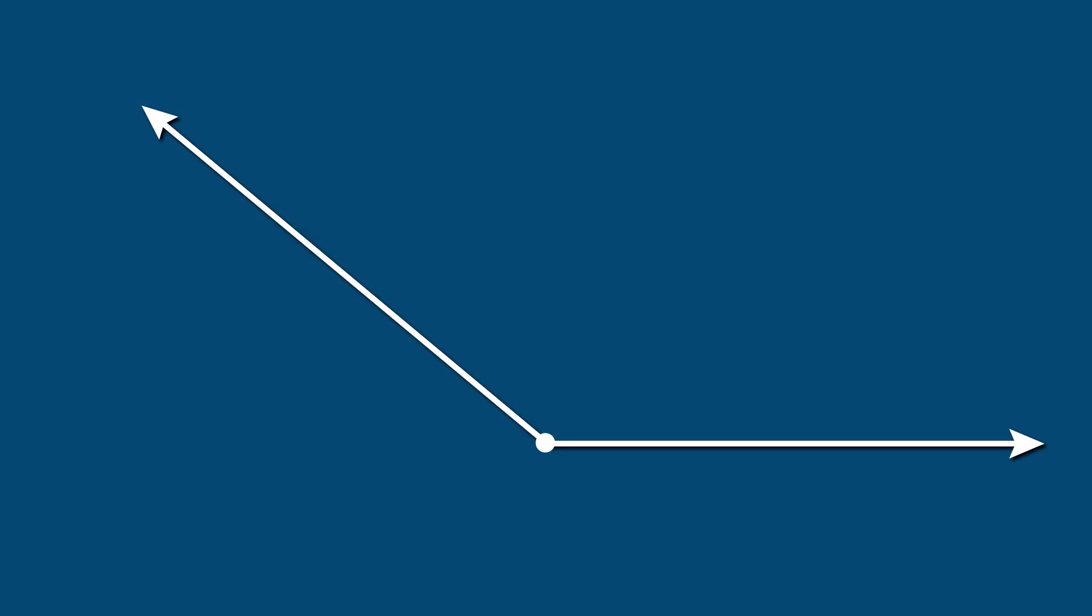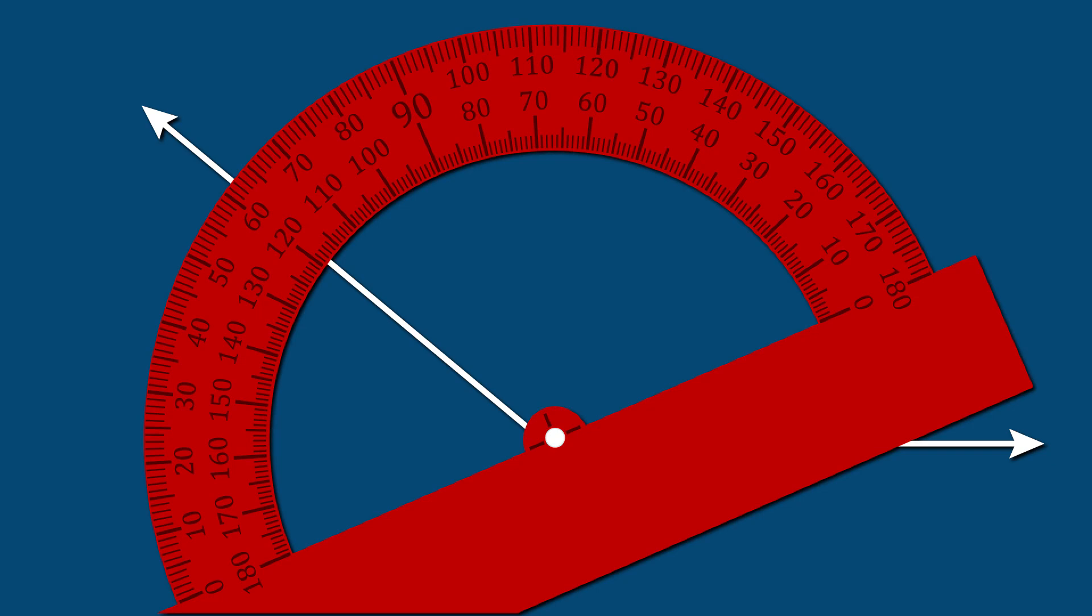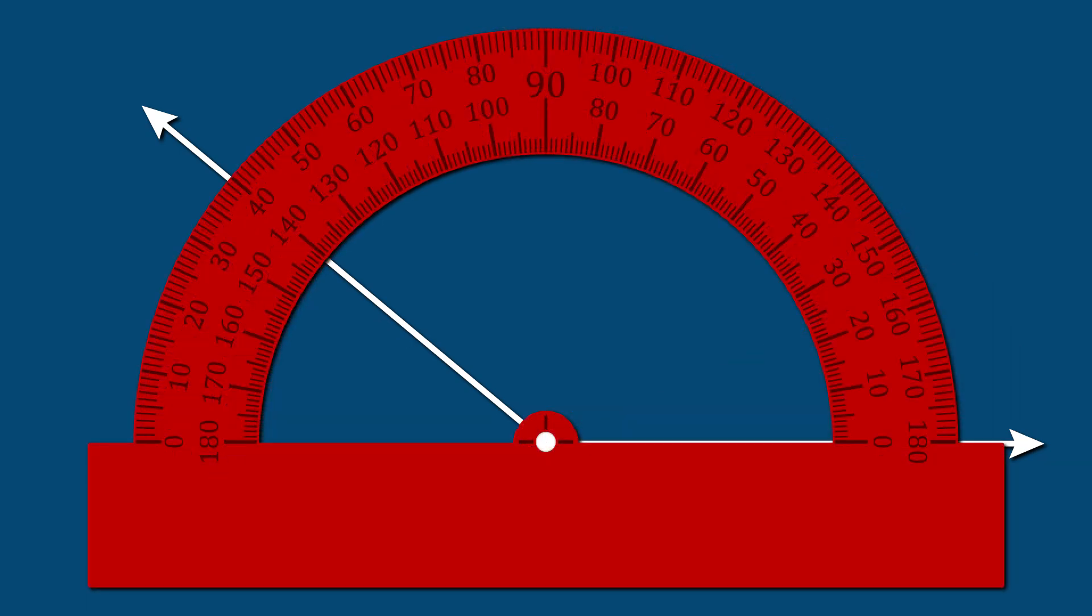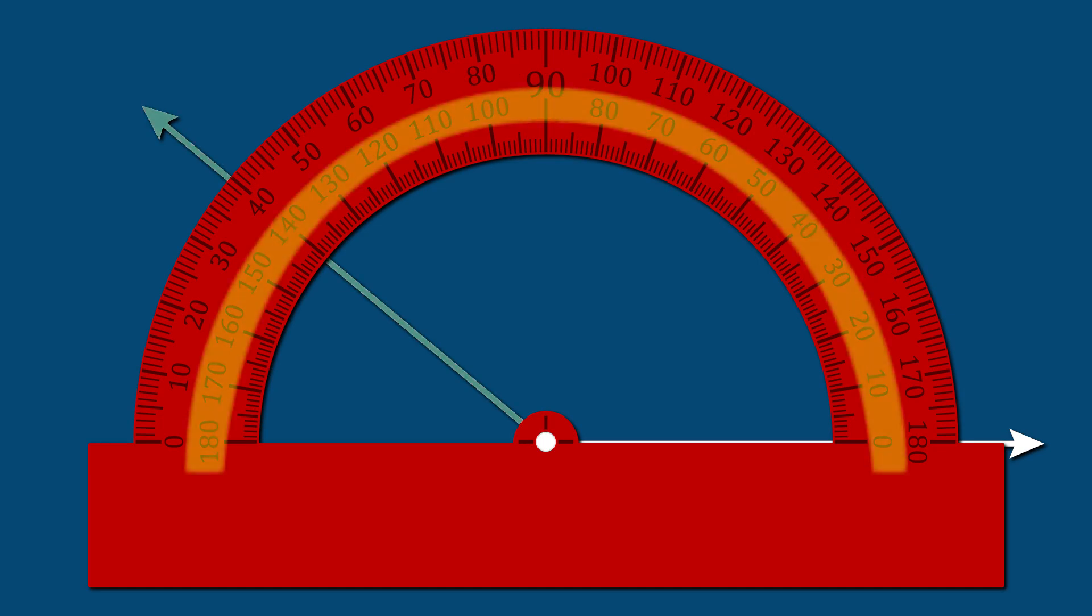So in summary, angles are formed where lines intersect. Angles are measured in degrees. We can measure an angle using a protractor. To do this, place the protractor over the vertex and align the baseline of the protractor. Now, look at where the second line of the angle is and determine the measurement in degrees.